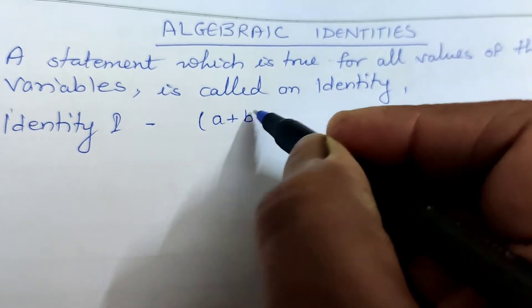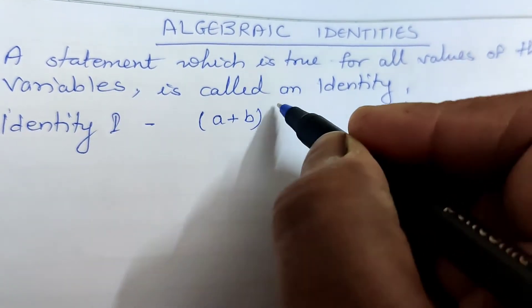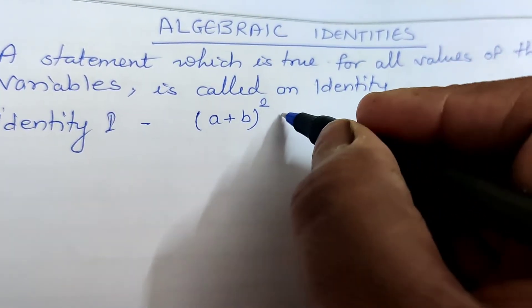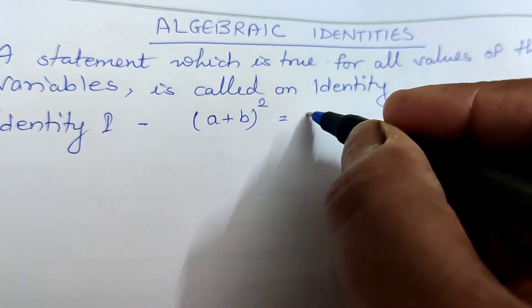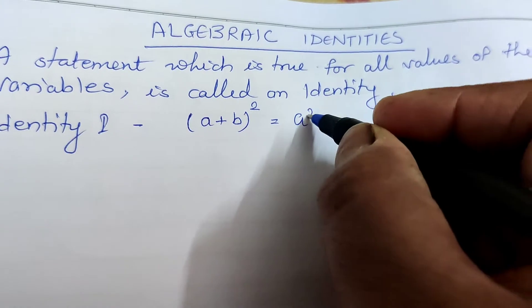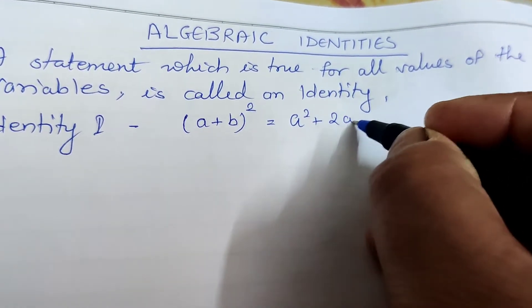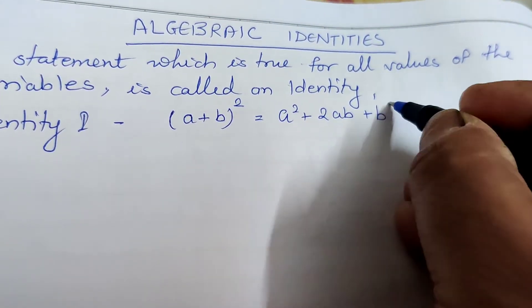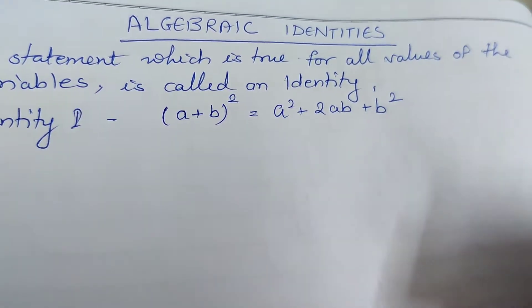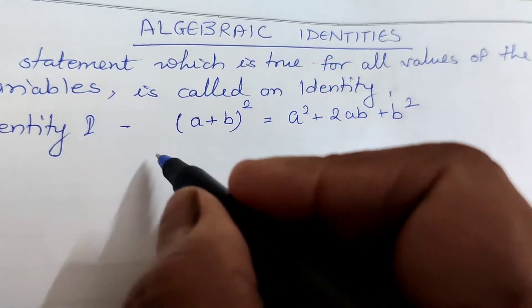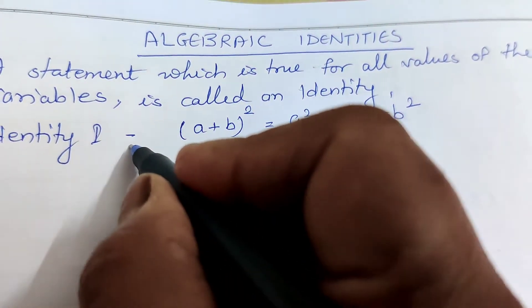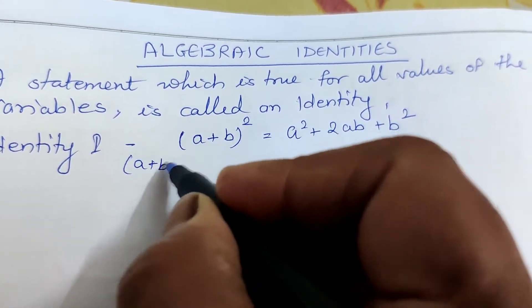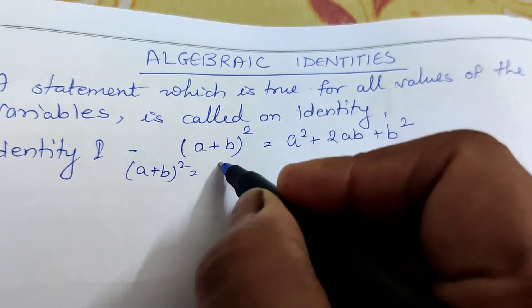Identity number one: (a + b) is a binomial. The square of (a + b) equals a² + 2ab + b². Now, how will you prove that (a + b)² equals this?